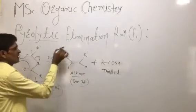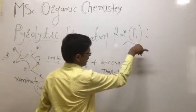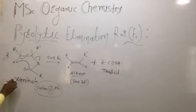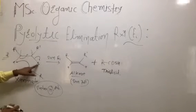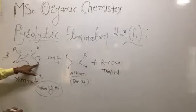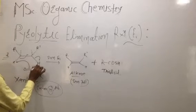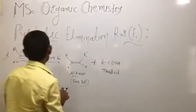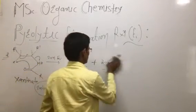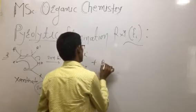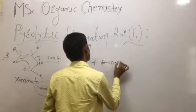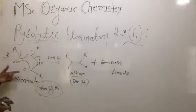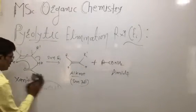Again, intramolecular proton abstraction takes place and syn elimination reaction occurs. This is sometimes called E1 elimination. Instead of sulfur, a nitrogen atom can also be present. With nitrogen and oxygen — an NH atom — the product formed is R-C-O-N-S2, which is an amide.